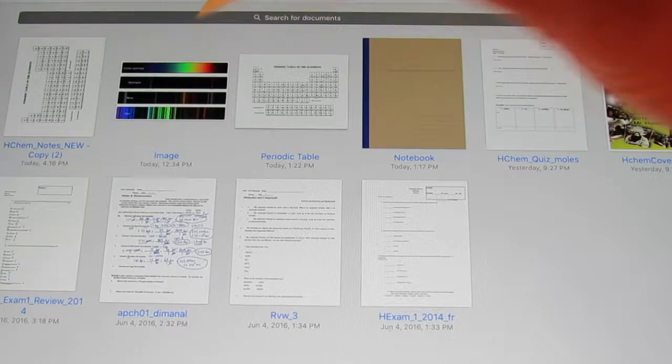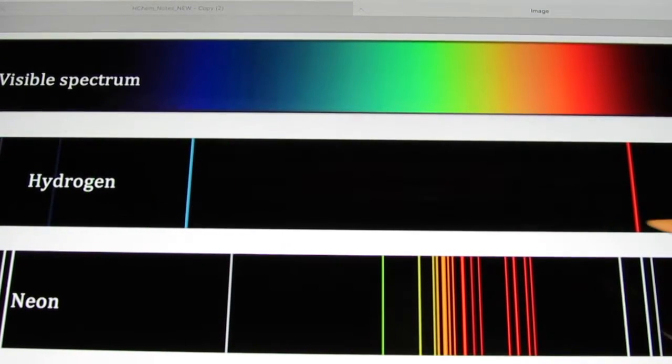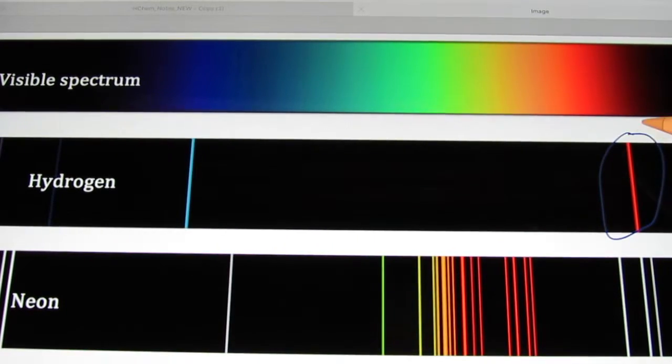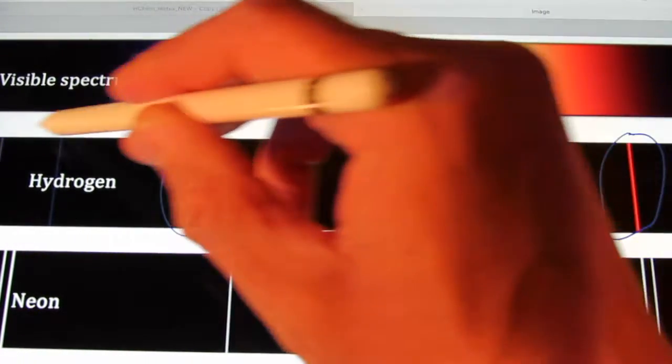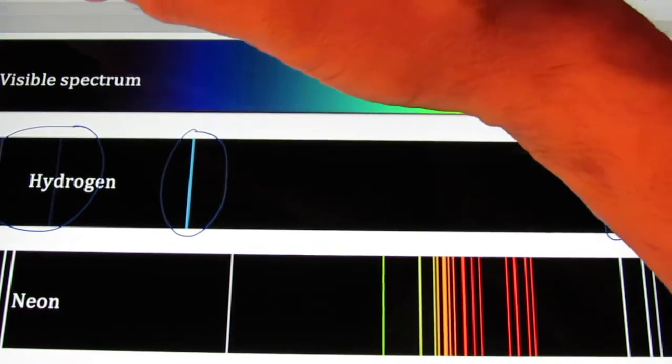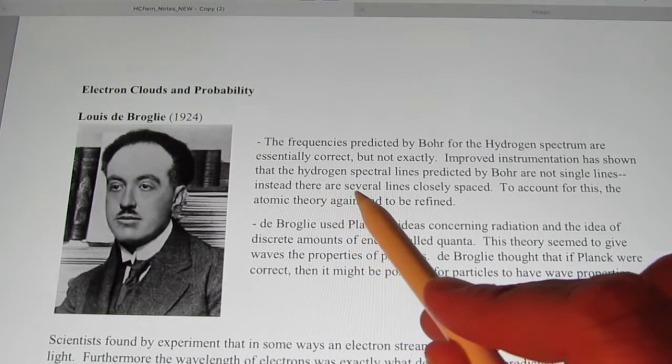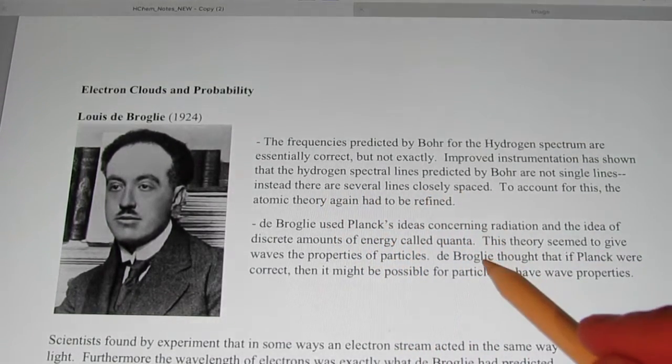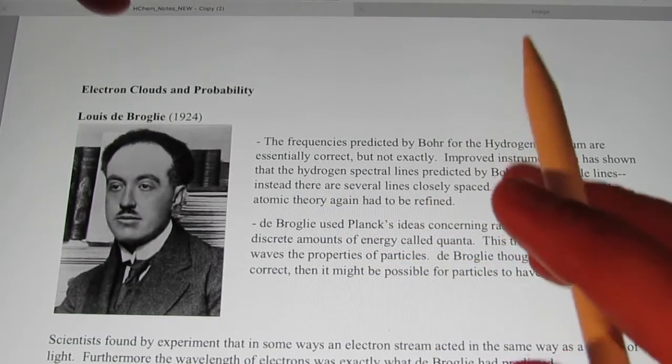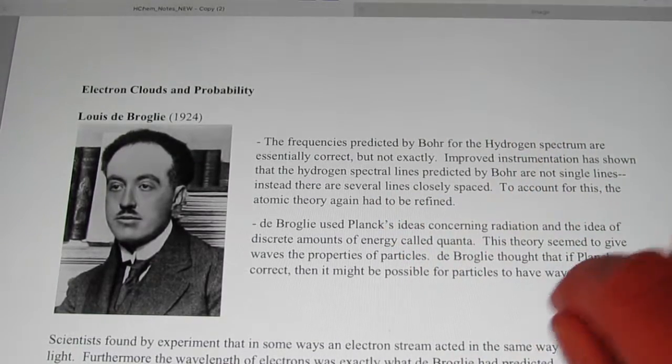Let's take a look at it again. So these lines that we see on the hydrogen spectrum, this red one here, these blue and purple ones over here, they're not actually single lines. Instead, they are several lines closely spaced together. And there needed to be an accounting for this. And so the atomic theory was then again refined.